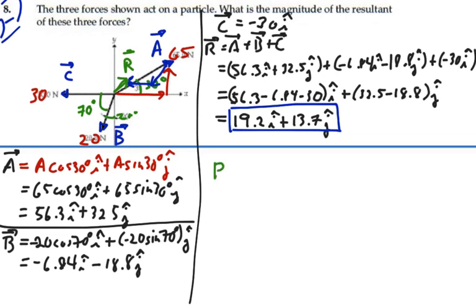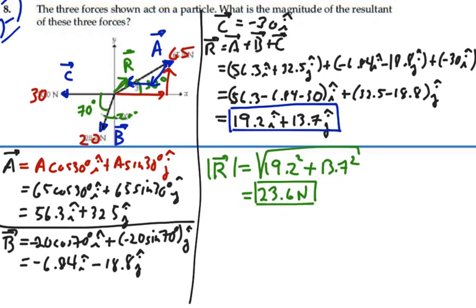The magnitude of this vector is going to be all our components squared and added together under a square root. So that's going to be 19.2 squared plus 13.7 squared, all under the square root. And that is equal to 23.6 Newtons. So that is the magnitude of our resultant vector of these three forces together, 23.6 Newtons.